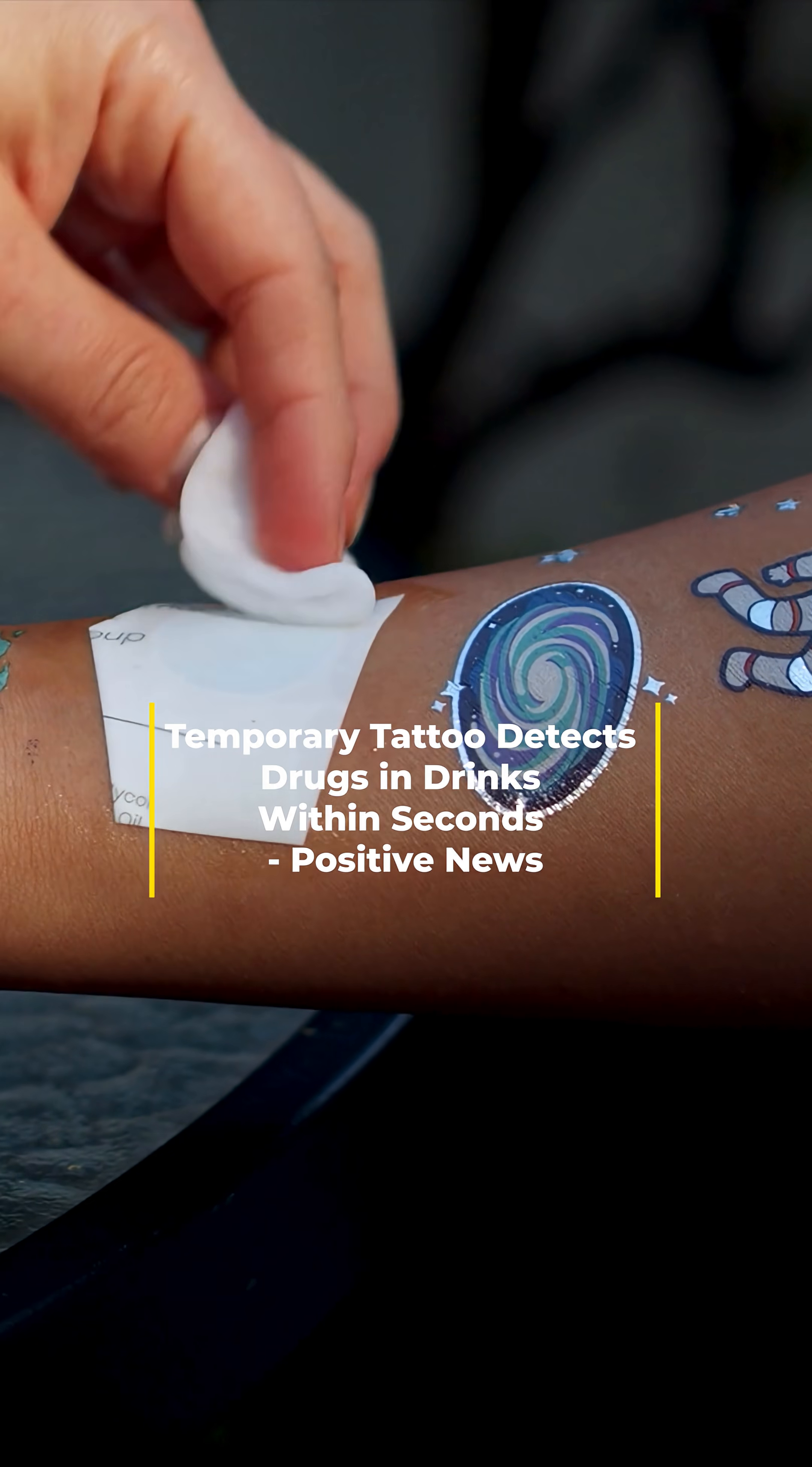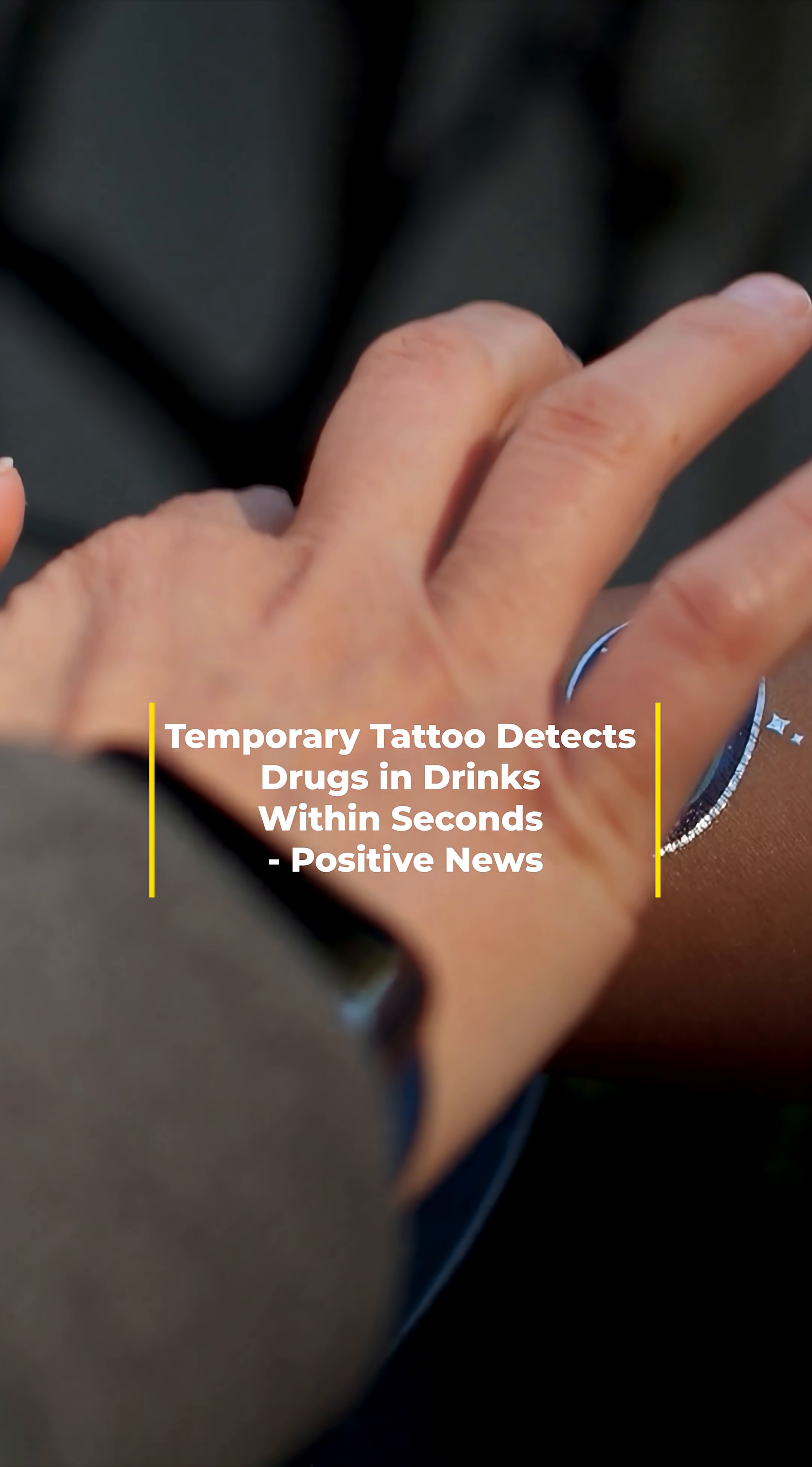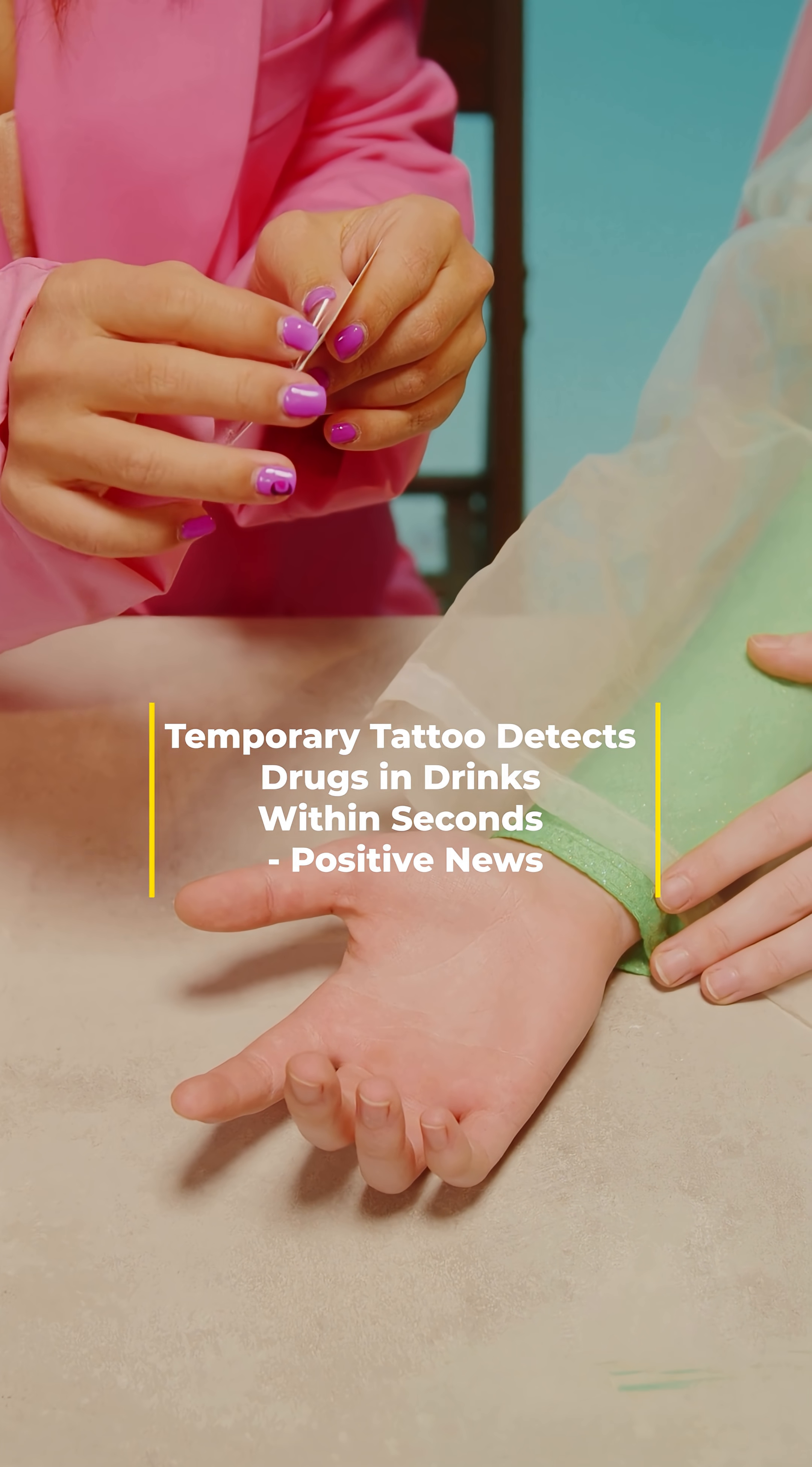A temporary tattoo that detects drugs in drinks could prevent spiking with Rufies. The news seeker responds within one second to even low concentrations of the drug GHB, according to scientists.